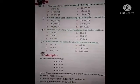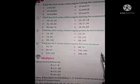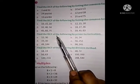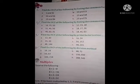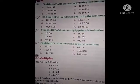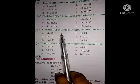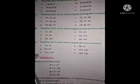Understand? Like this, you have to find out the HCF of the other numbers. Now see question number 4: Find the HCF of the following by prime factorization. We have to use the prime factorization method to find out the HCF of the given numbers. Let's take Example F.